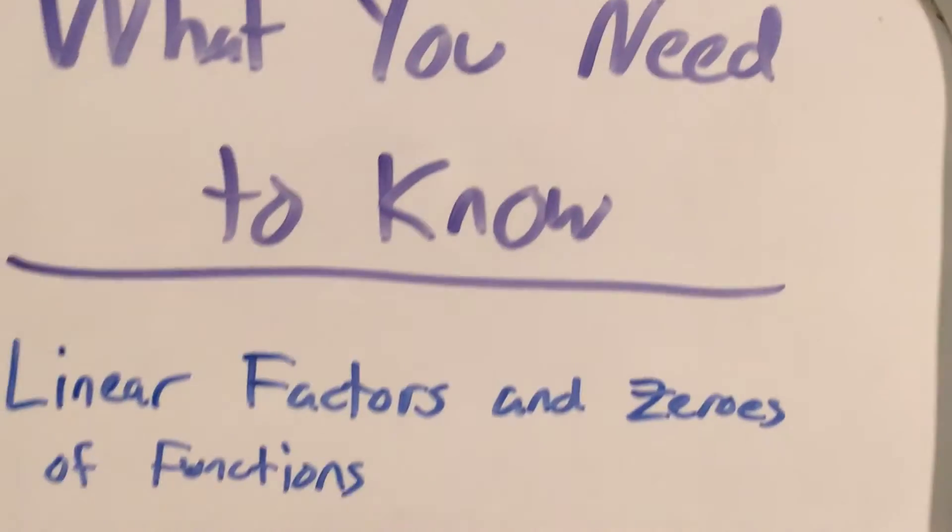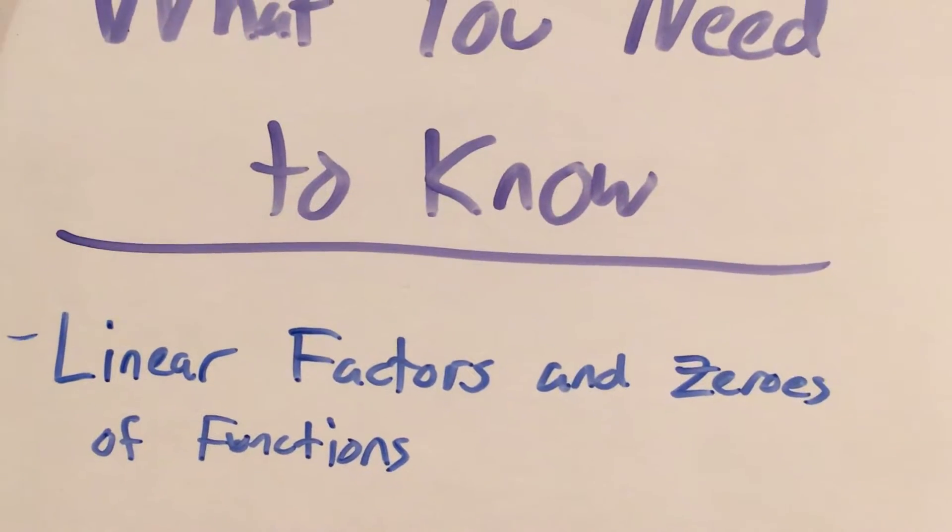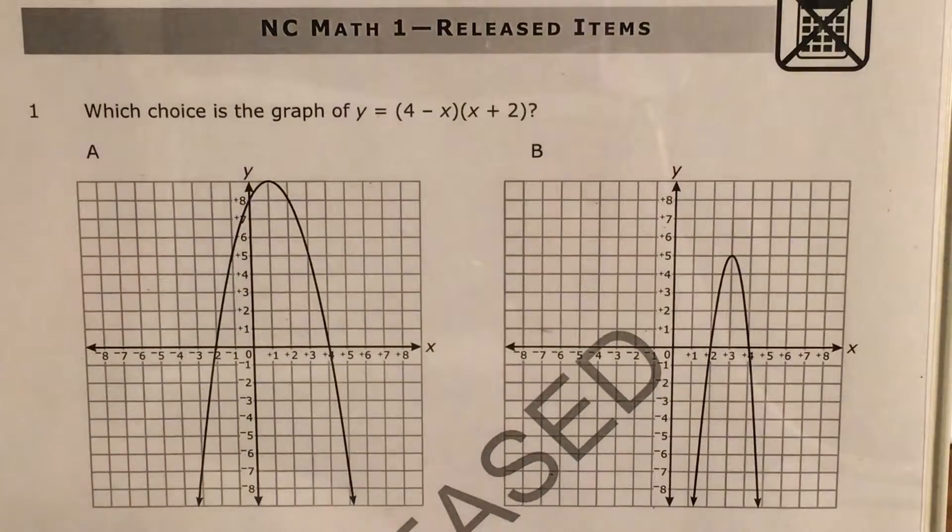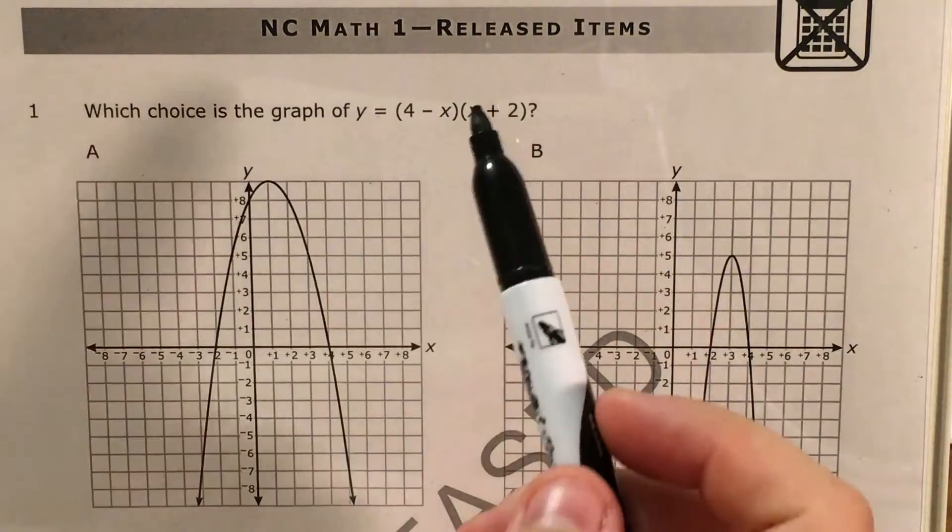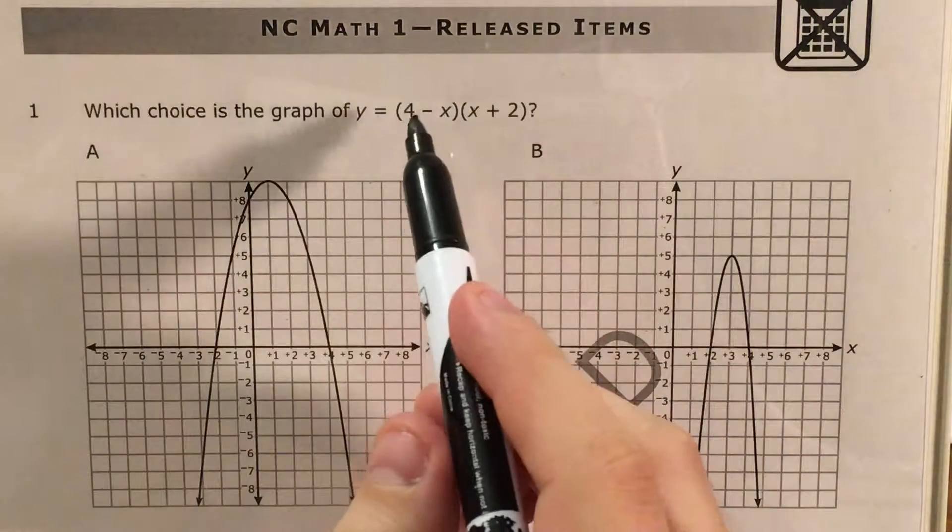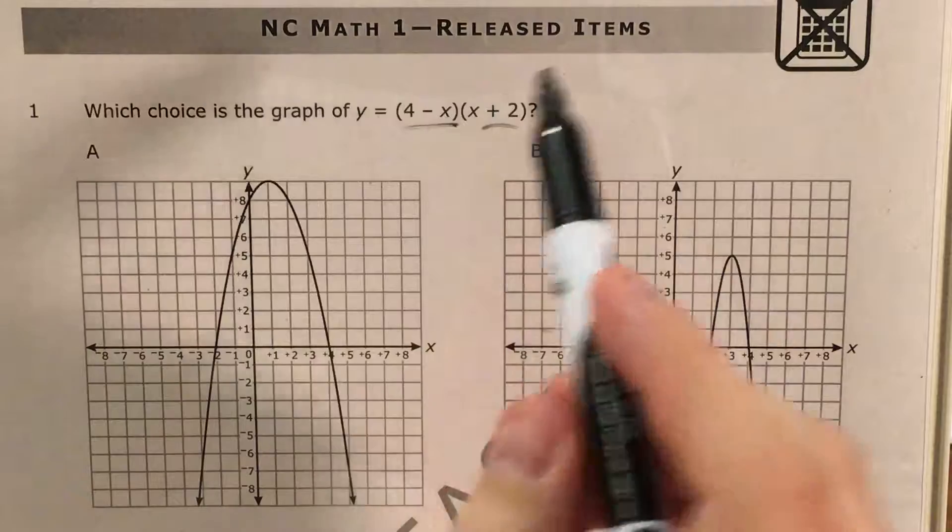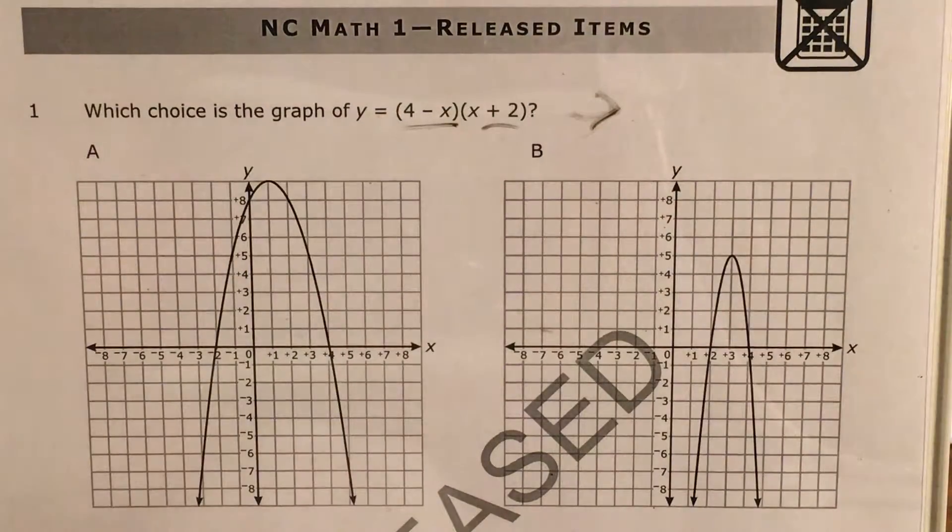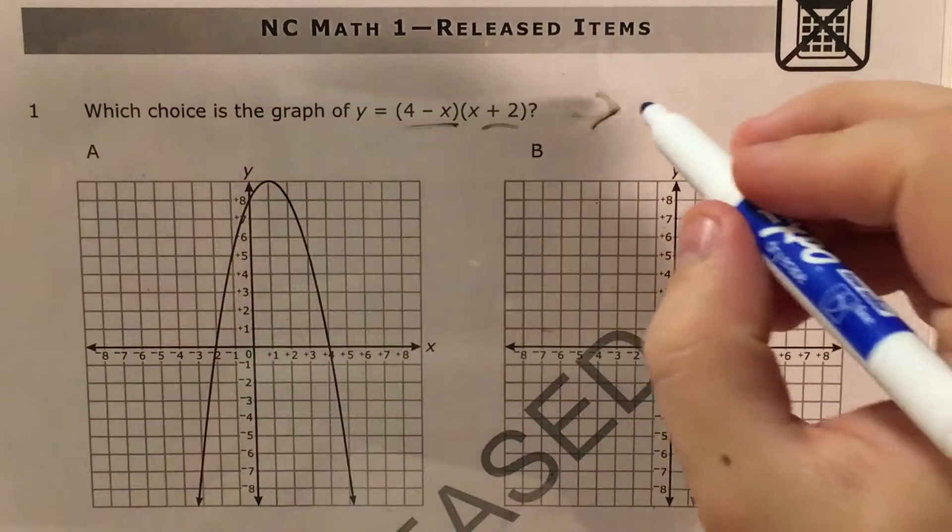To do a question like this when you see it on your test, you'll need to know about linear factors and zeros of your functions. What exactly does that mean, and why did I call these linear factors? Well, any function that's made up of two of these things is going to end up looking something like one of those y equals x squared functions.